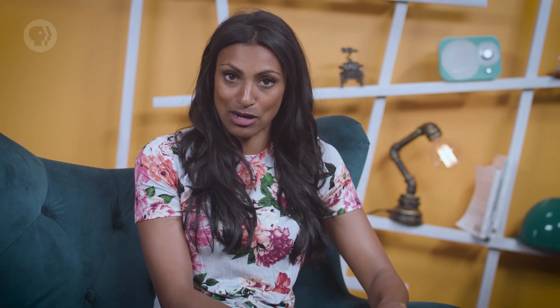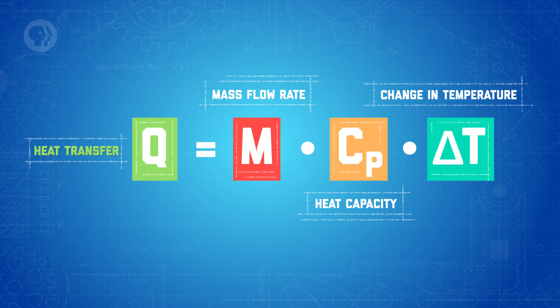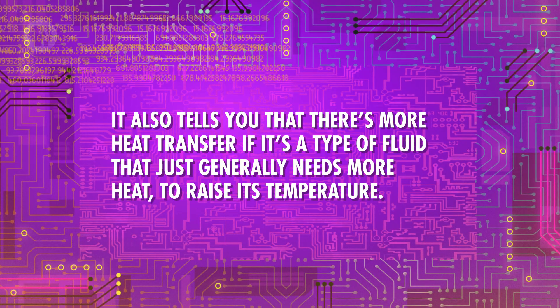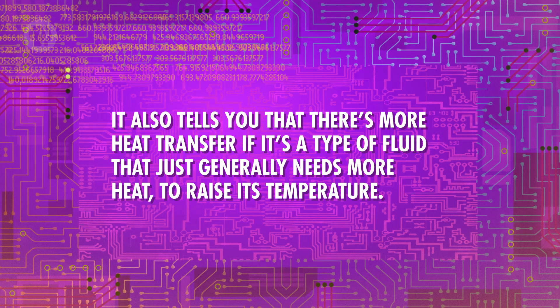There are two main equations for heat transfer that you can use to figure this out. The first looks at each fluid individually and defines heat transfer, represented by the letter Q, as the product of three of the chosen fluid's properties: its mass flow rate M, or how fast it's moving; its heat capacity C, or how much heat you need to raise the fluid's temperature; and its change in temperature, delta T, after it passes through the heat exchanger. This equation tells you that if there's a greater change in fluid's temperature, there was more heat transfer. It also tells you that there's more heat transfer if it's a type of fluid that generally needs more heat to raise its temperature. Finally, it says it takes more heat transfer to accomplish a given temperature change in a fluid that's moving really fast — if each particle of fluid isn't staying in the heat exchanger for very long, you need more heat transfer to raise its temperature quickly before it leaves.